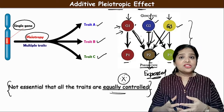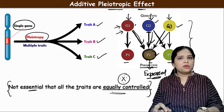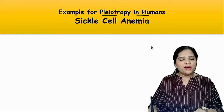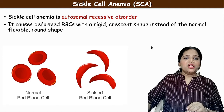So not all characters are completely or equally controlled — sometimes they may be expressed less, sometimes more. This is called the additive phenotypic effect. Now let us see the important examples of pleiotrophy in human beings. We have two important examples: sickle cell anemia and phenylketonuria. Let us start with sickle cell anemia.